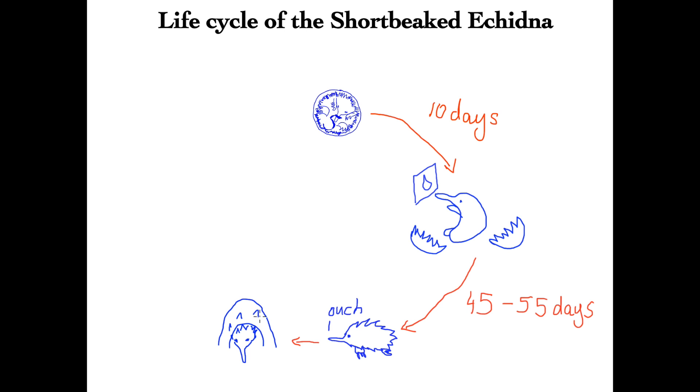When the echidna puggle has grown to full age, after about five months in the den, the mother actually returns for her last visit, feeds it, and basically leaves the den open instead of backfilling it like she normally does. That's about the most interaction they have. From then on, they lead pretty solitary lives.